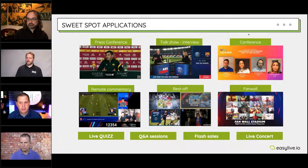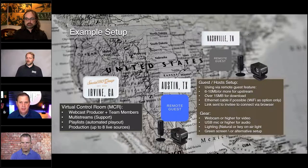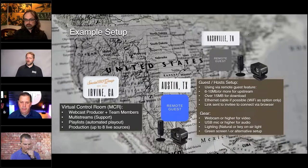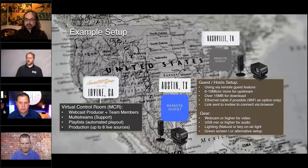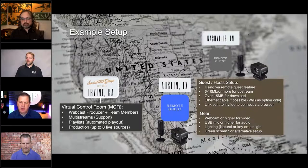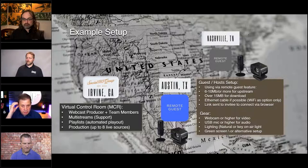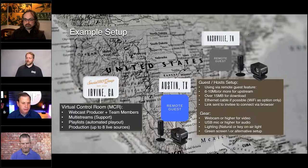An example setup as a webcast producer: the beauty of EasyLive.io is to virtualize your master control room. The webcast producer could be in one location, and you could have another set of team members in another location. That gives you the ability to have a production in the control room handling multi-streams, playlists, playing out content, as well as production with eight live sources.